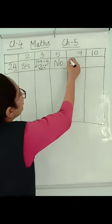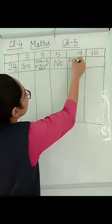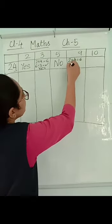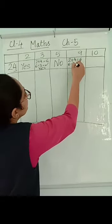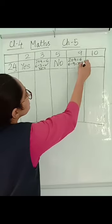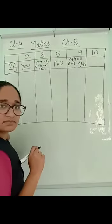For 9, again, you have to add. 2 plus 4 is 6. Does 6 come in the table of 9? No. So this is no.